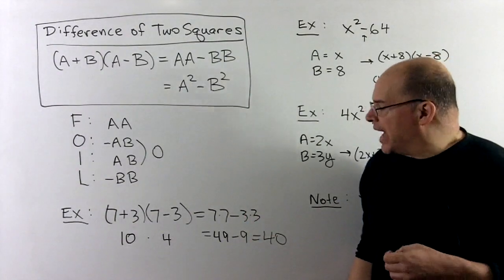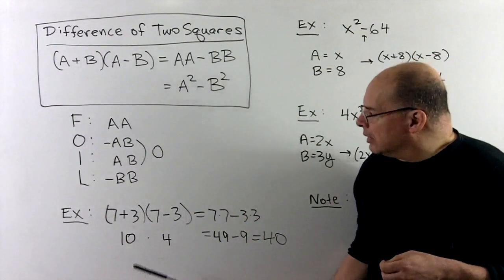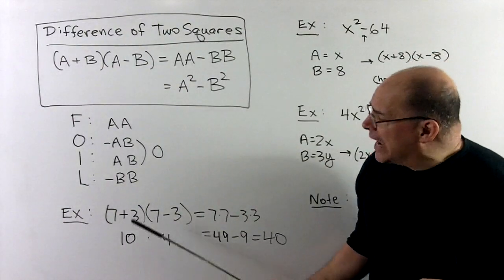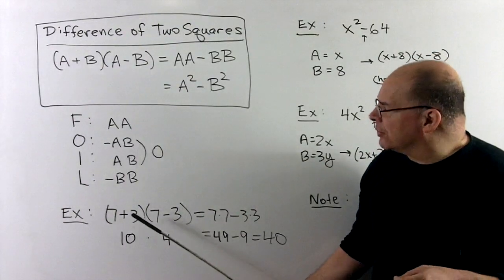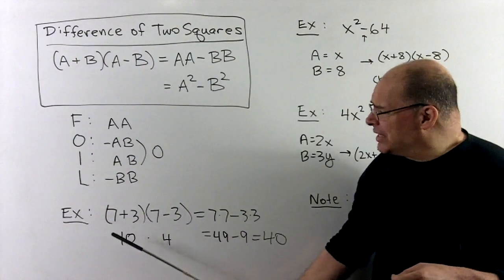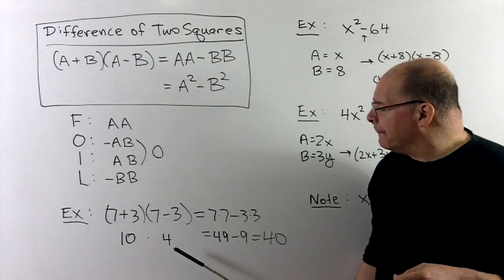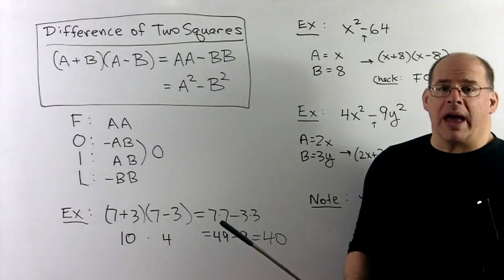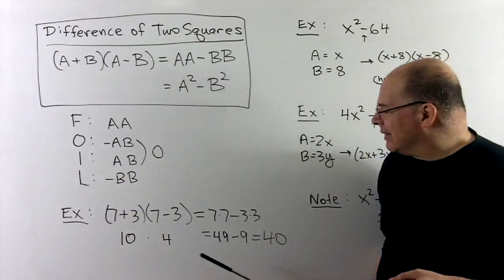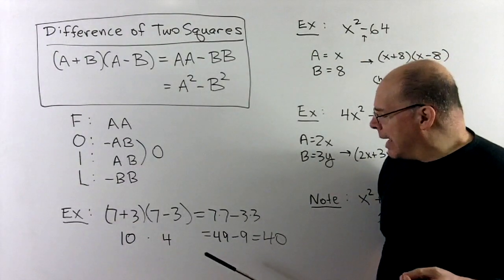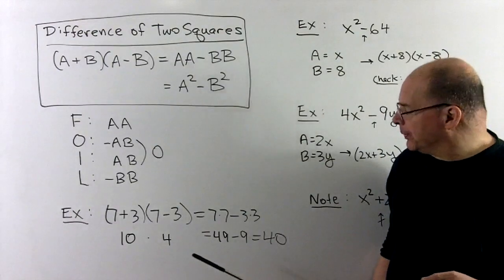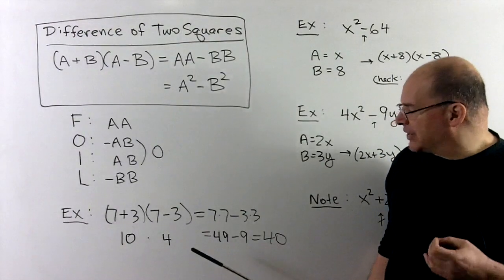For a numerical example, if we try (7 + 3)(7 − 3), that's just 10 times 4, which is 40. By the rule, we get 7×7 − 3×3, which is 49 − 9, giving us 40 again. So that checks out.